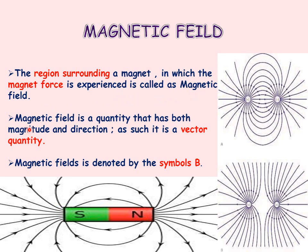Magnetic field is a quantity that has both magnitude and direction, so it is a vector quantity. The magnetic field is represented by or denoted by the symbol B.